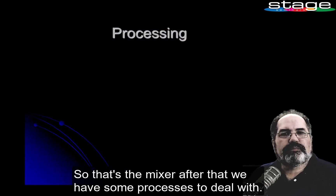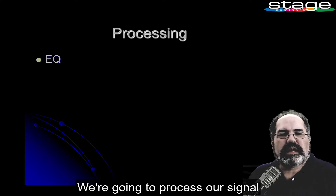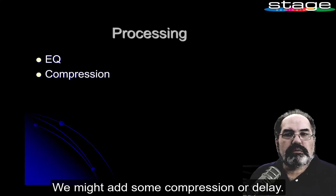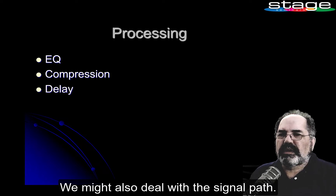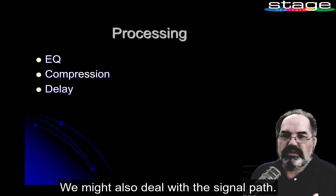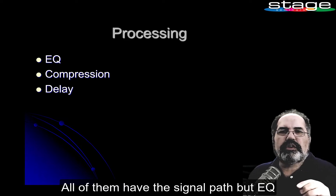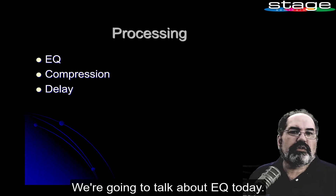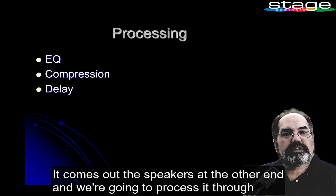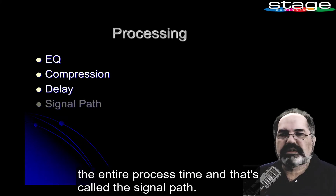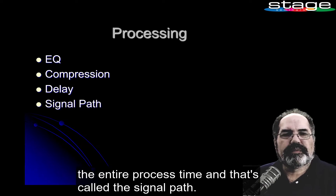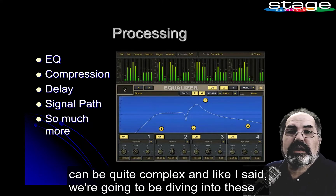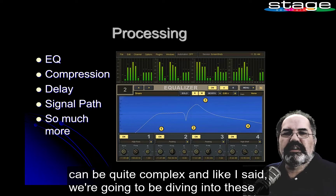After that, we have some processes to deal with. We are going to process our signal and maybe give it some EQ or equalization. We might add some compression or delay. All of them involve the signal path, but EQ, compression, and delay are used fairly often. The sound goes through the system via the microphone and comes out the speakers, and that whole process is called the signal path. The tools used to control your various frequencies and overall audio signal path can be quite complex, and we will be diving into these in other classes.